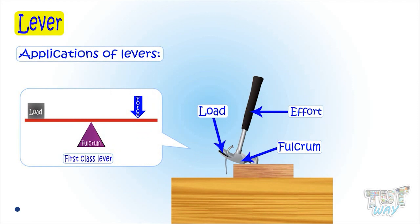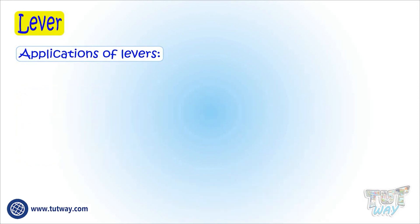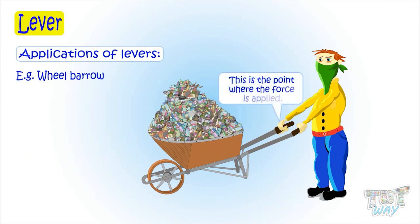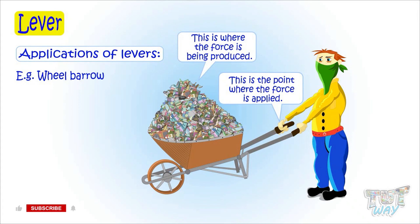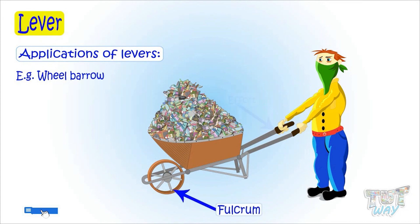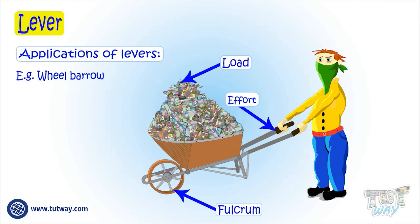Now let's look at more examples. This is a wheelbarrow — let's try to find out if there is a lever in it and which type. This is the point where force is being applied, this is where the force is being used or the load is supported, and this is the support or the fulcrum. So this is a lever, as it has a fulcrum, a force, and a load.